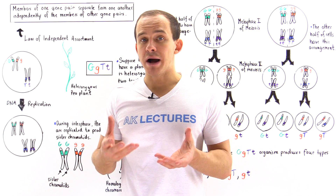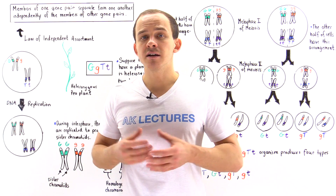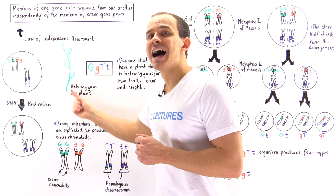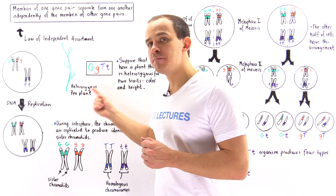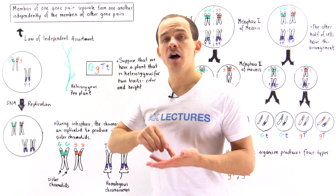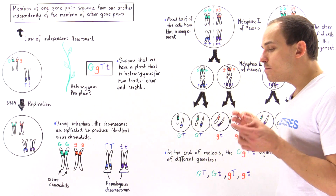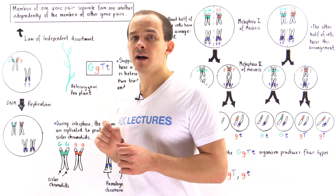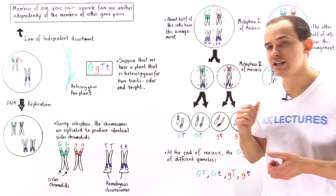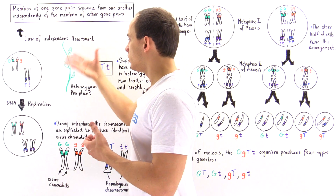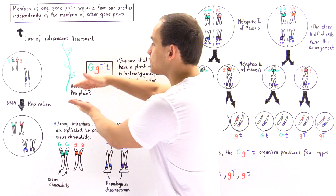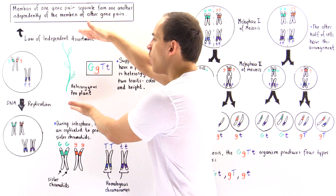To demonstrate the law of independent assortment, let's look at a pea plant. We're focusing on a heterozygous pea plant that is heterozygous for two different traits: height and seed color. The green seed color is dominant over yellow, while tall height is dominant over short. So the phenotype of this plant will be tall and green.